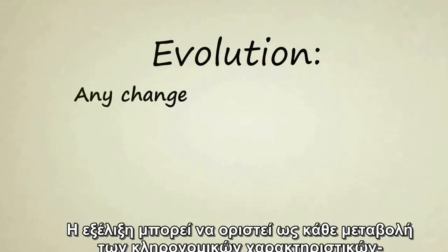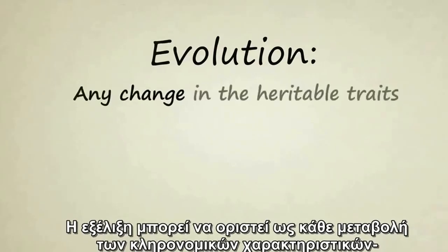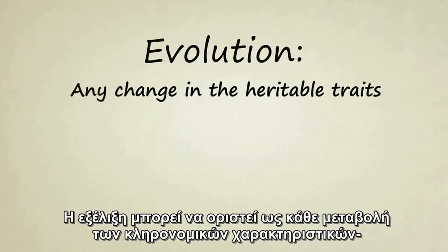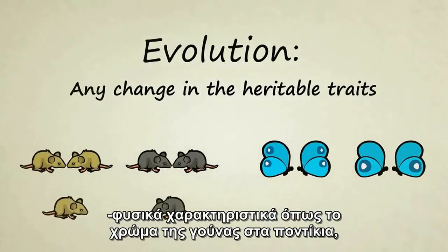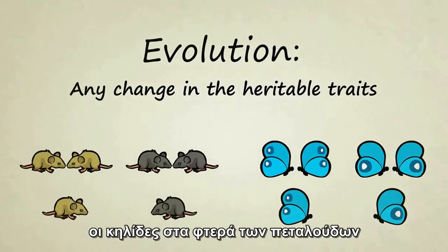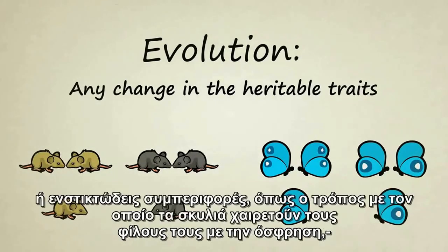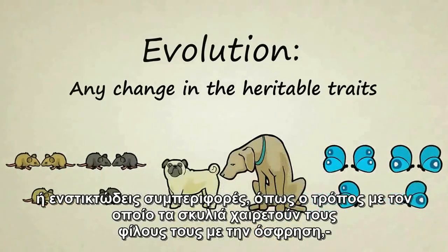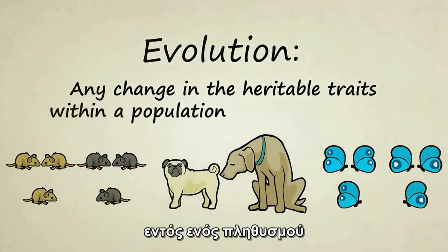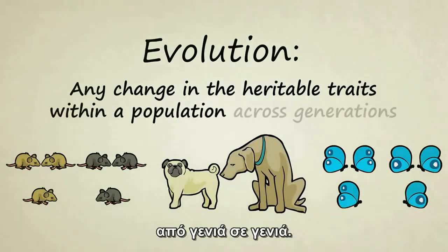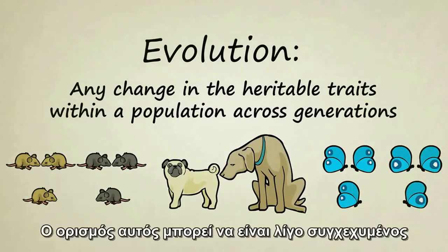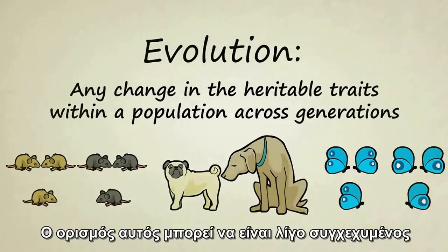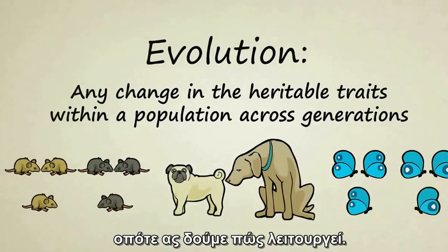Evolution can be defined as any change in the heritable traits — those are physical traits like fur color in mice, spots on the wings of butterflies, or instinctive behaviors like the way that dogs greet their friends with a sniff — within a population across generations. This definition can be a bit confusing, so let's see how it works.